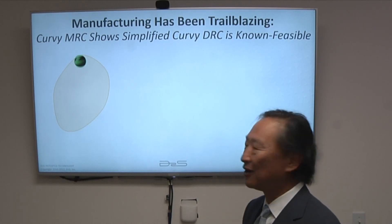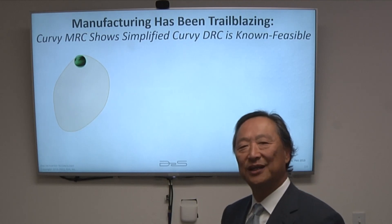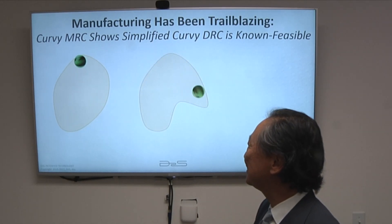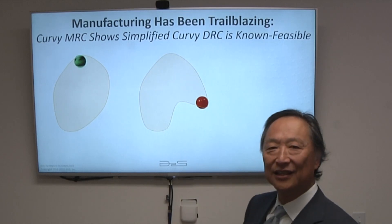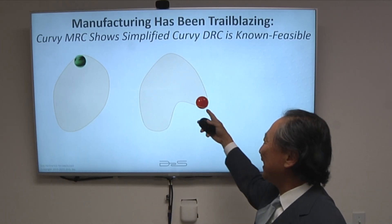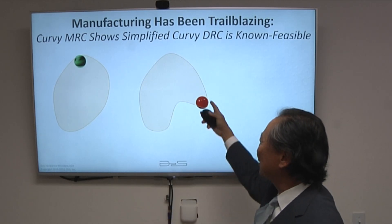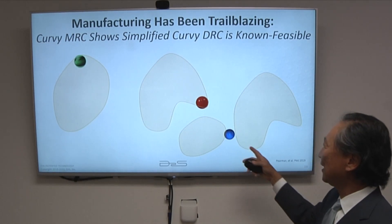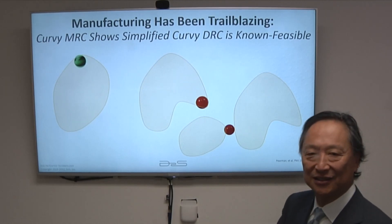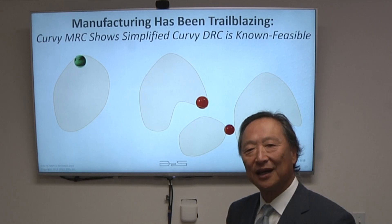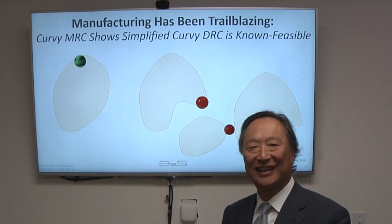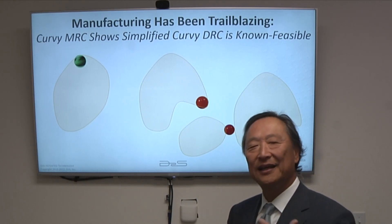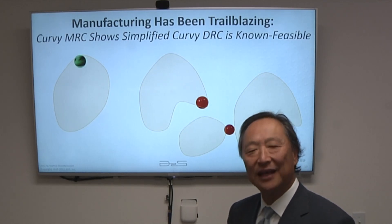It turns out that mask rule checking can be made much simpler in the curvilinear world. This is an example of rolling a ball inside to do minimum space, minimum width, and also maximum curvature check. You roll a ball inside, and as soon as it intersects an edge, that's a violation because the curvature just isn't enough. Or you can take a ball of a different size and roll it outside, and if it hits something, that's a minimum spacing violation. This is an intuitive illustration of what can be done differently in the curvilinear world — and in fact it makes things a lot simpler.